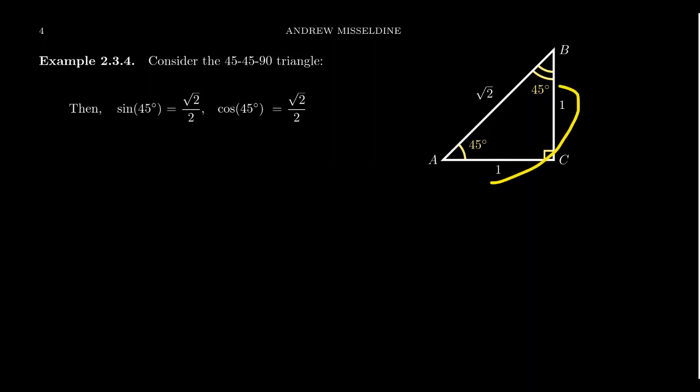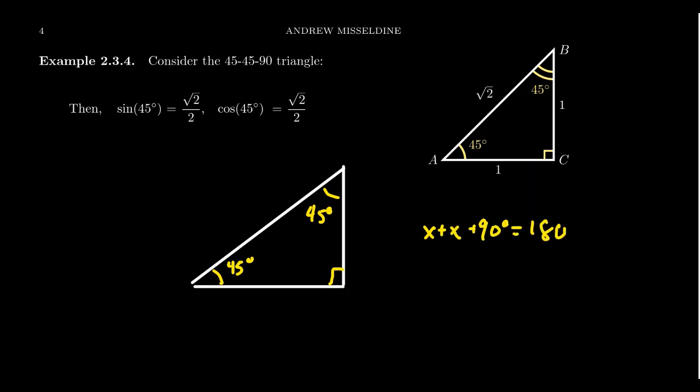But how did we know these were the side lengths that work out for a 45-45-90 degree triangle? The idea is that it's an isosceles right triangle. So if we have our right triangle, for which it's isosceles, if it's an isosceles triangle, the two non-right angles have to be the same. So how do we know they're 45 degrees? If you have an angle and angle plus 90 degrees, this adds up to be 180 degrees.